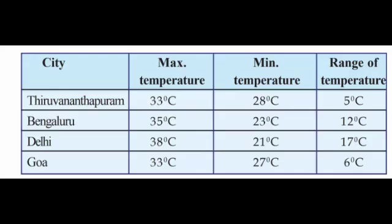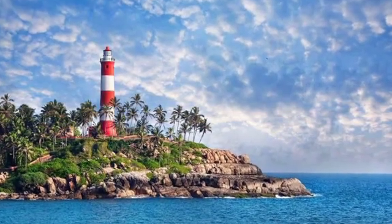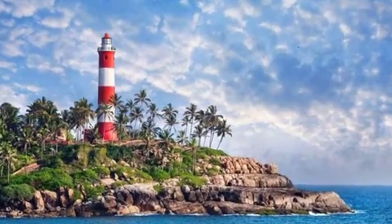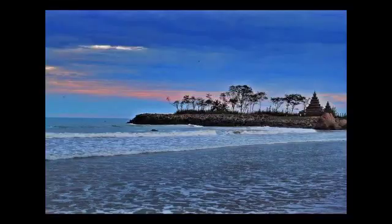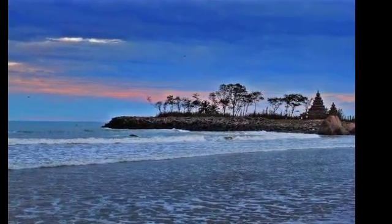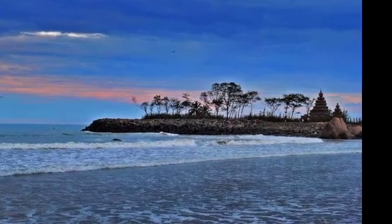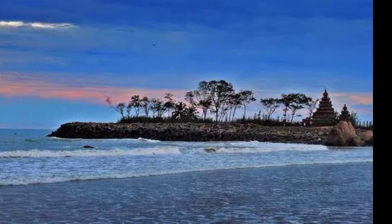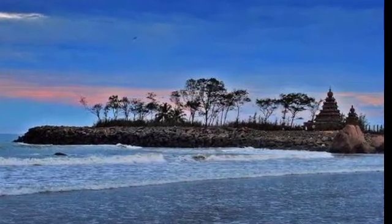Distance from the sea. The temperature range is very high for Delhi and Bangalore, and very low for Thiruvananthapuram and Goa. From the table, we know that the range of temperature will be high at places away from the sea and will be low at places close to the sea. Temperature remains moderate at places close to the sea because the heating of land causes wind to blow from sea to land, and cooling of land causes wind to blow from land to sea.